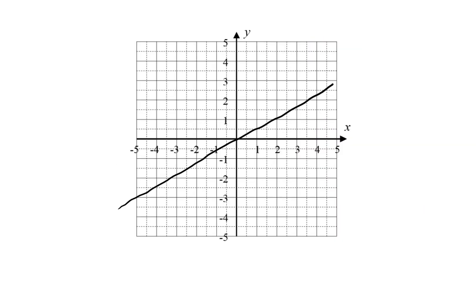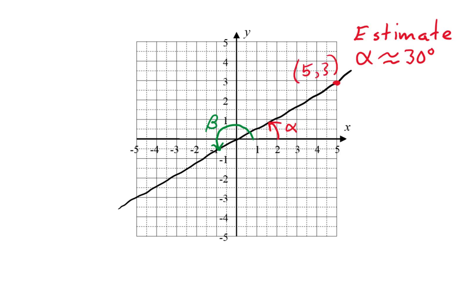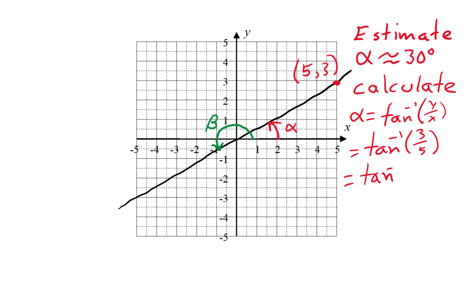Consider one last example involving a straight line through the origin. One end of the line gives us an angle on the right side of the circle — I'm calling that angle alpha. The other end gives us an angle on the left side, which I'm calling beta. I'm estimating angle alpha at about 30 degrees. To calculate it, we find a point on the terminal side, (5, 3), and use the inverse tangent. The inverse tangent of y over x is the inverse tangent of 3 over 5, which is the inverse tangent of 0.6. This gives us an angle of 31 degrees, which agrees with the estimate.